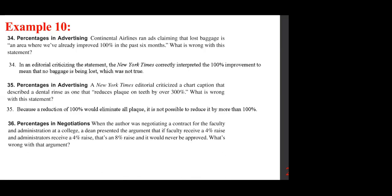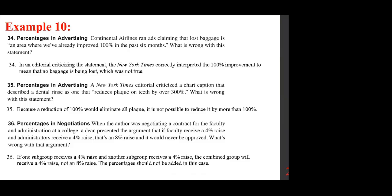When the author was negotiating a contract for faculty and administration at a college, a dean argued that a 4% raise for faculty and a 4% raise for administrators equals an 8% raise that would never be approved. What's wrong with that argument? It's not an 8% raise — each group got 4% from different budgets and they don't add up.